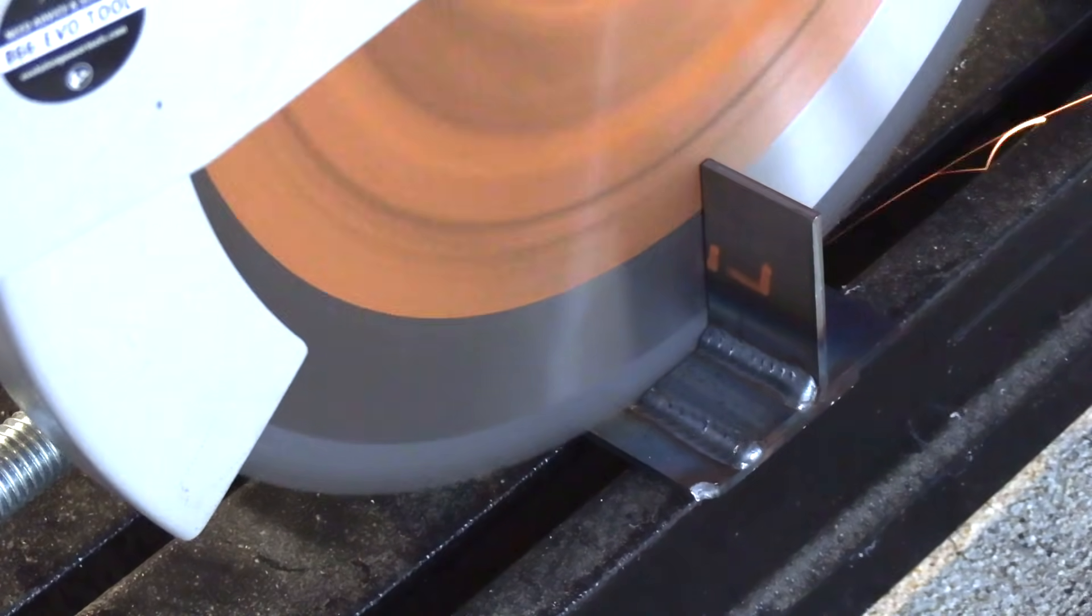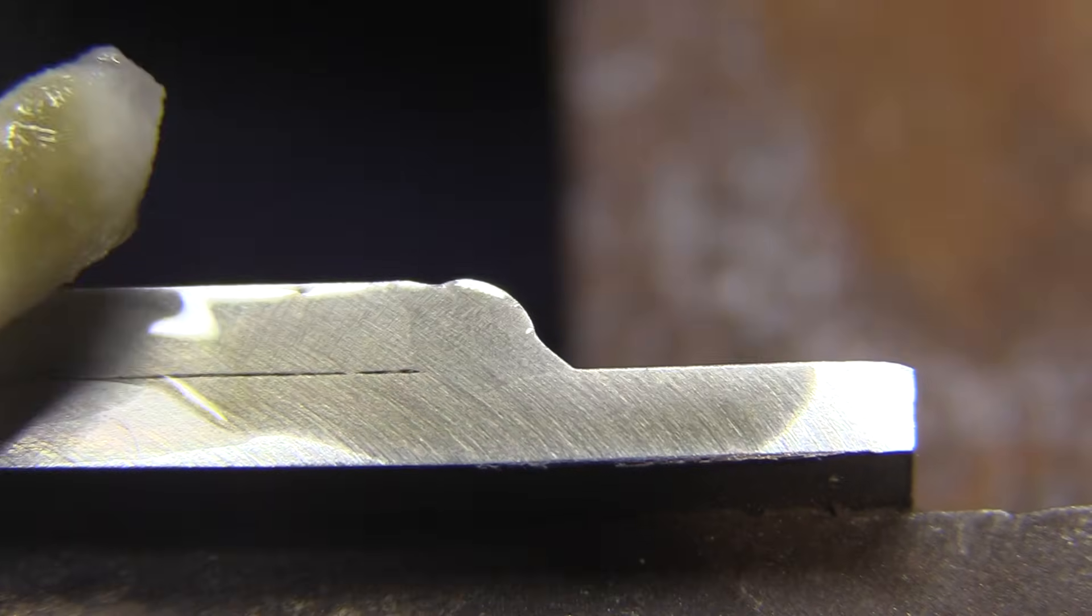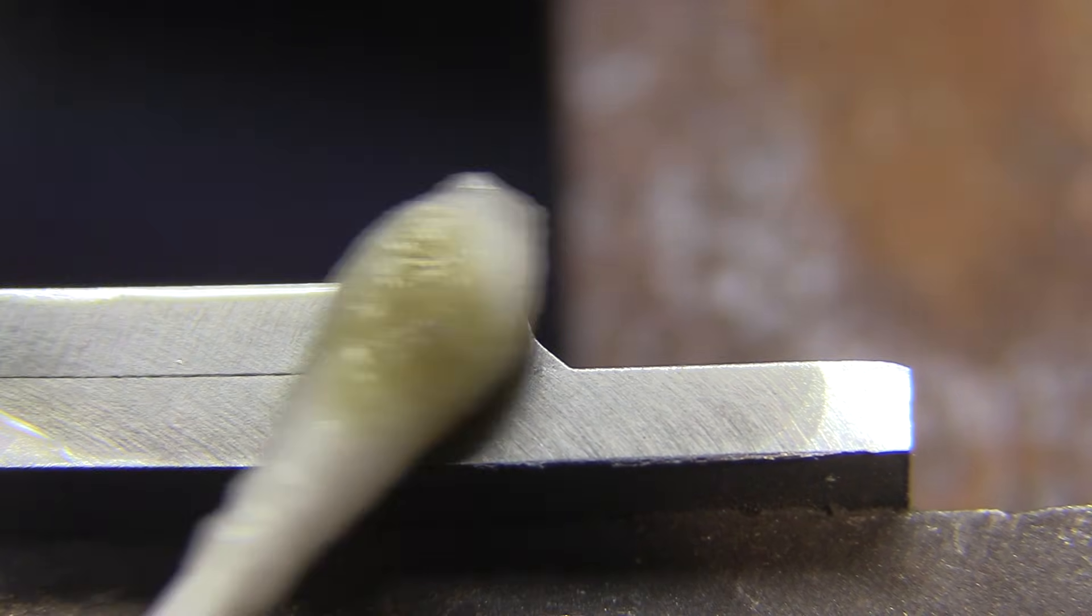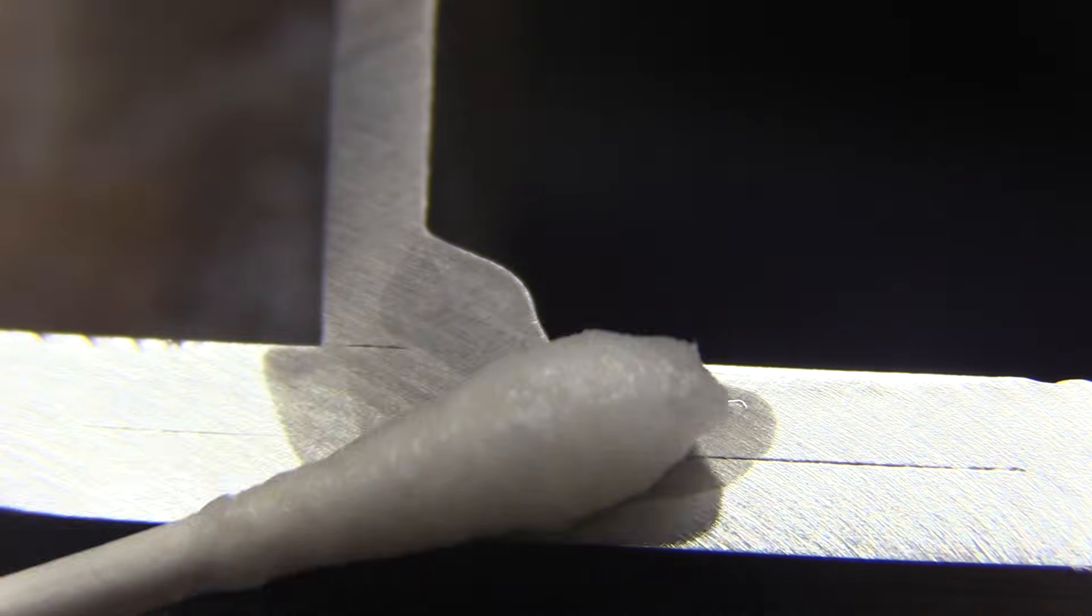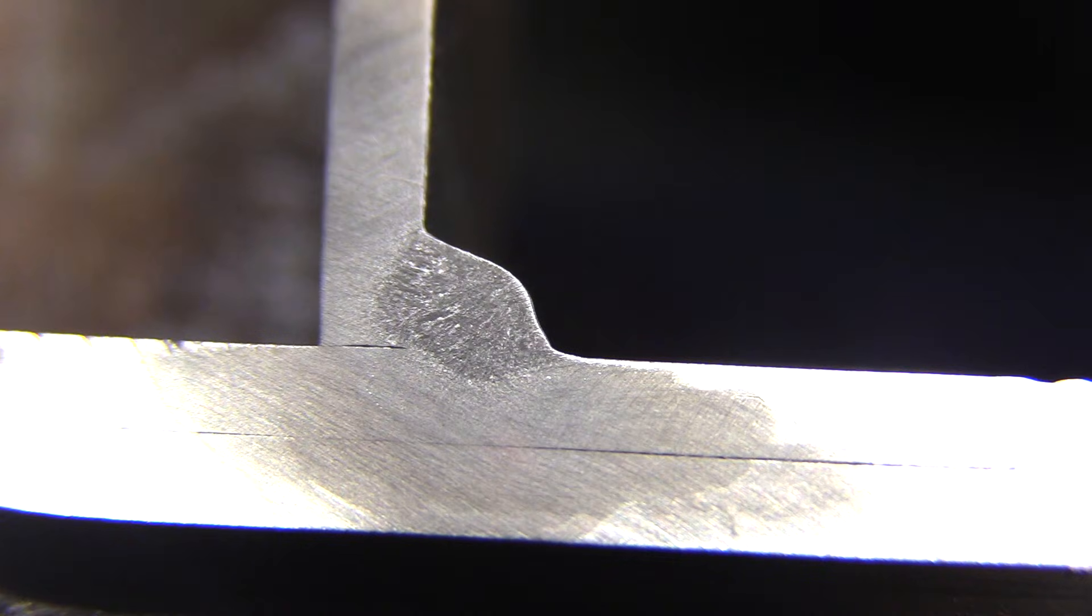So even with wire feed speed, which is your amperage adjustment, dropped all the way down to 190, I still get plenty of penetration on the lap, plenty of penetration on the T-joint. Still got a little bit of a convex bead, but it's in there.